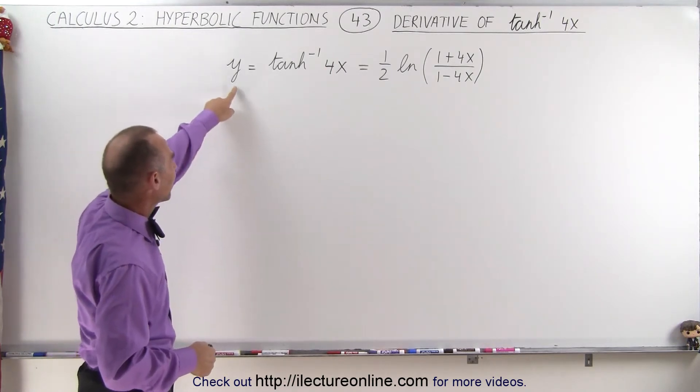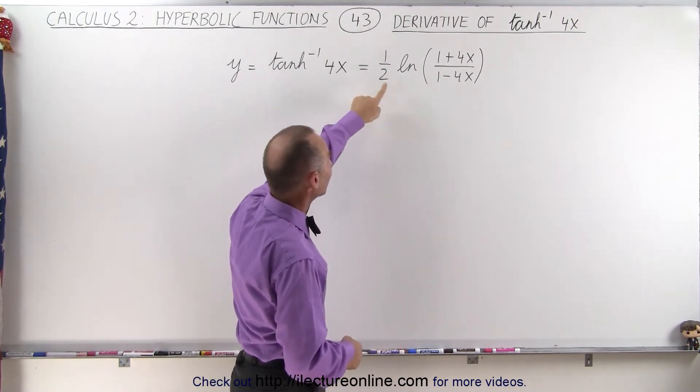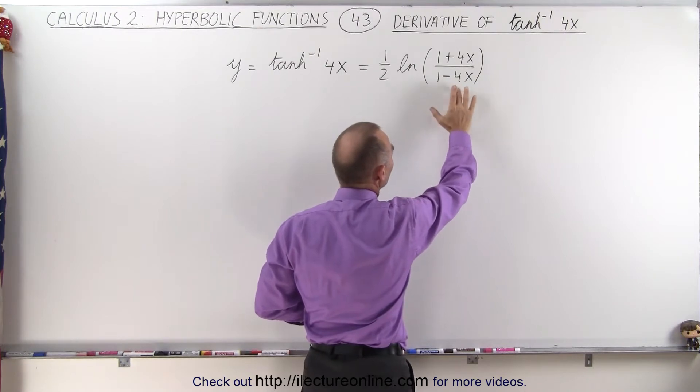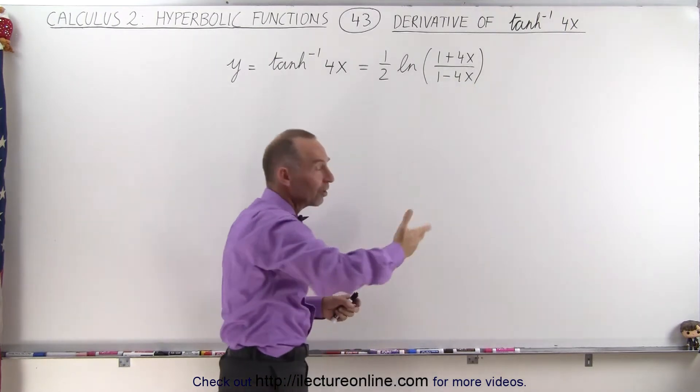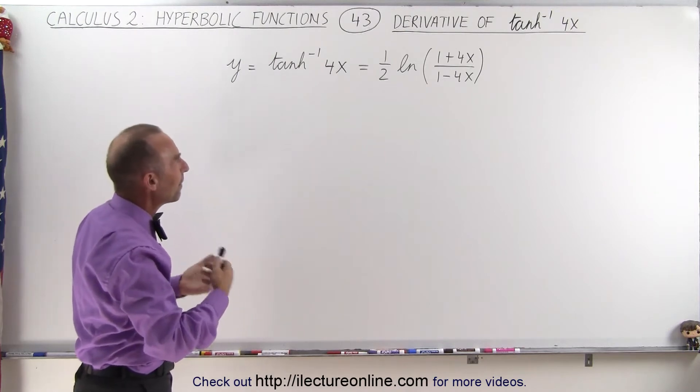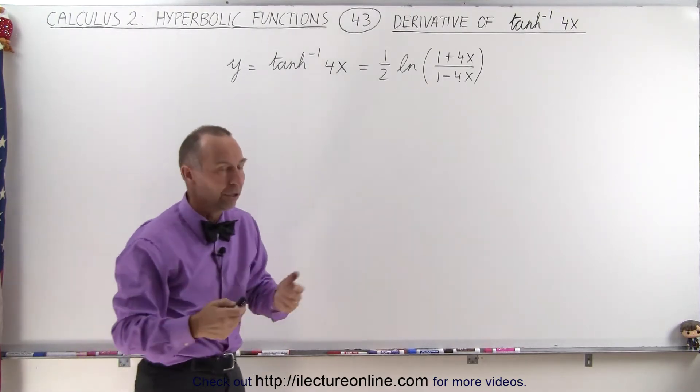And so we set y equal to the inverse hyperbolic tangent of 4x, which is equal to 1 half times the natural log of 1 plus 4x divided by 1 minus 4x. So instead of 1 plus x and 1 minus x, we have 1 plus 4x and 1 minus 4x. We're simply replacing x by 4x in our equation.